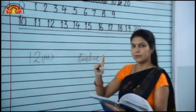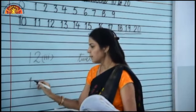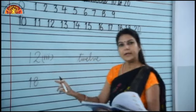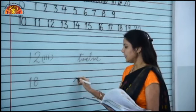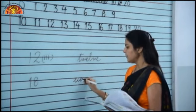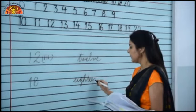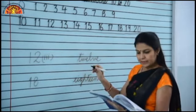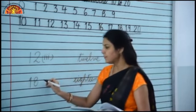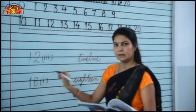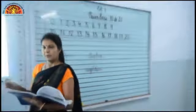Let's take one more example. Another number is 18. Now you have to find out the spelling of 18 here. Spelling of 18 is E-I-G-H-T-E-E-N, 18. Now it is written on number 1, so we will write 1 in front of 18. I hope you have understood. You can do the others yourself.